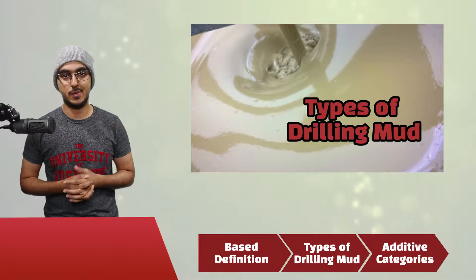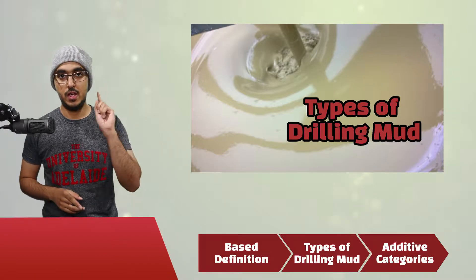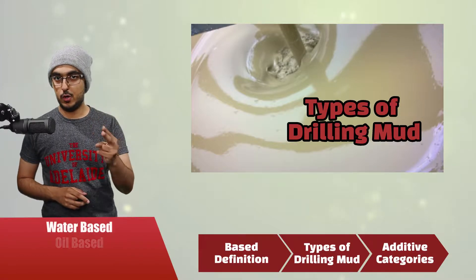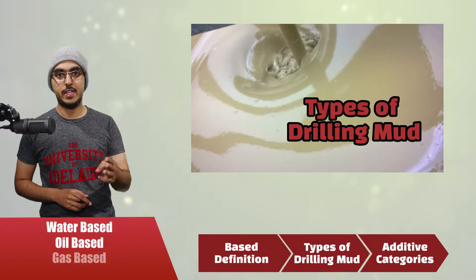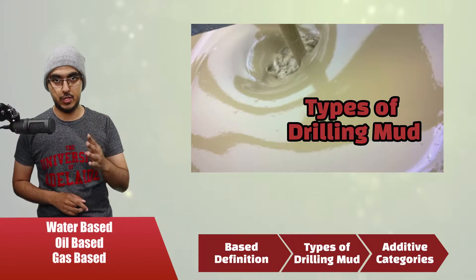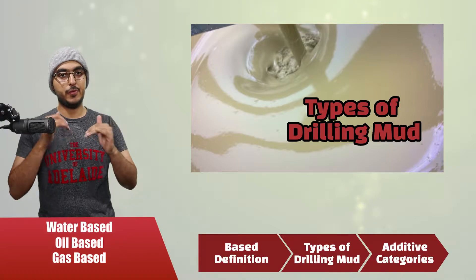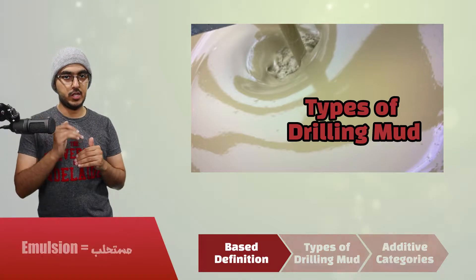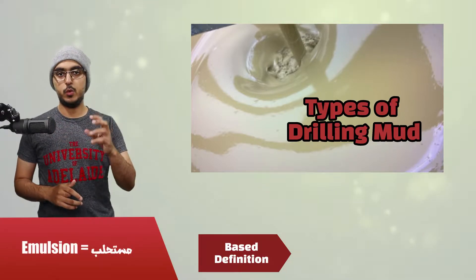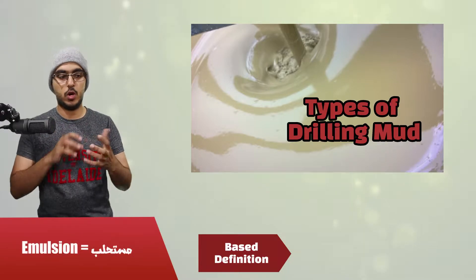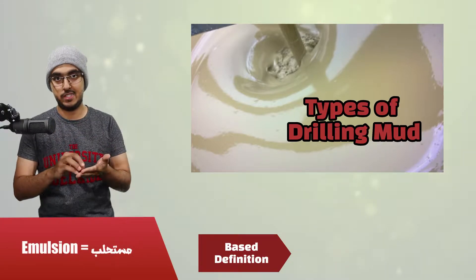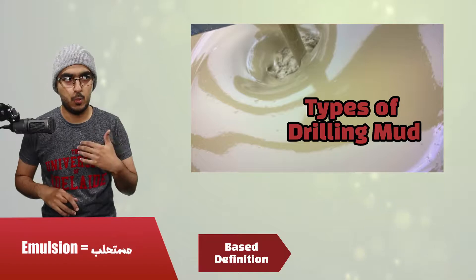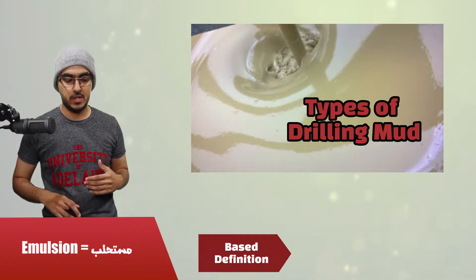The four most commonly used types of drilling muds are water-based, oil-based, gas-based, and emulsion-based. But before we get into each and every one of them, we need to define what blank-based is — so what water-based is.